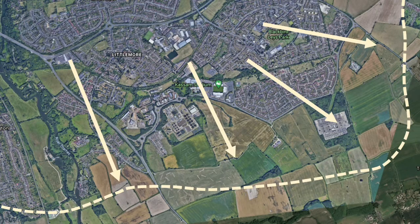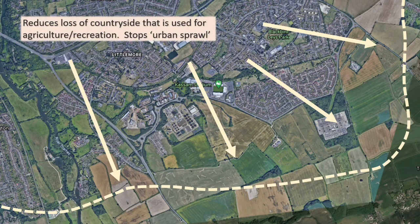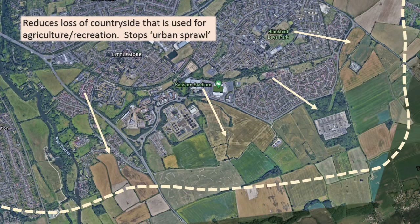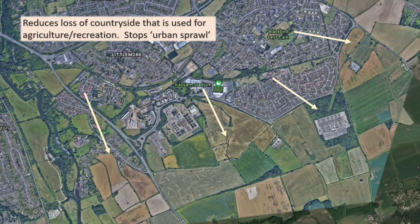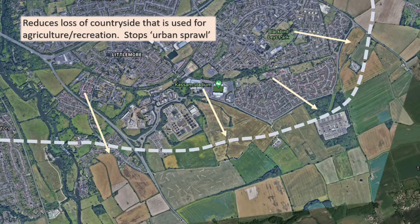Another big advantage of a Brownfield site is that if you don't use one, you'll use Greenfield sites instead, meaning your city gets bigger. By using Brownfield sites you actually reduce urban sprawl, and land that would otherwise be used for agriculture or recreation is saved. As we can see here, by using Brownfield sites instead of Greenfield, the limit of the city is kept significantly smaller and that uncontrolled development doesn't happen.